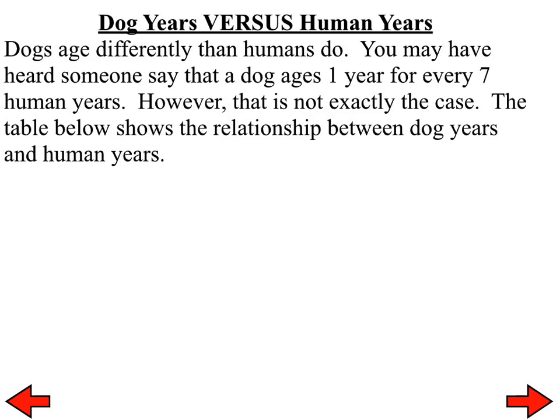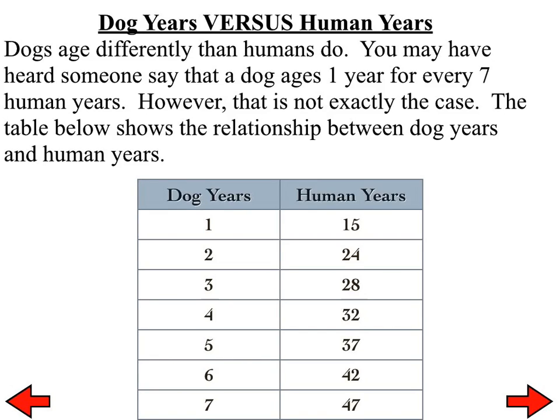Last problem for today. Dogs age differently than humans do. You may have heard someone say that a dog ages one year for every seven human years. However, that is not exactly the case. That's just usually an estimate, and it differs by dog breed. The table below shows the relationship between dog years and human years. So, here is what you need to do. You need to plot the data, and you need to come up with a line of best fit, and then from there, come up with the equation of that line. So, based upon the fact that we just did two problems that were actually a little tougher than this one, go ahead and do that. And then we will answer the question, based on your equation, what is the approximate human age when a dog is 11 years old?